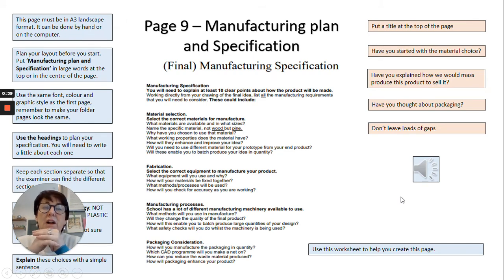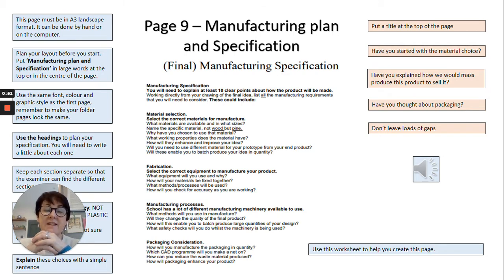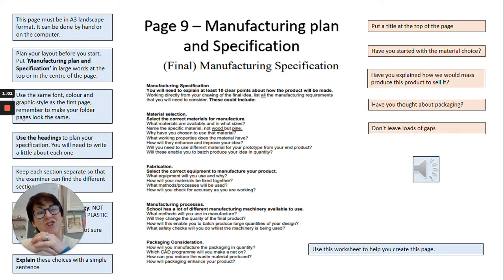First of all, I've got a worksheet here that's in the middle of the screen. It's available at school and it's also attached to the homework. You would need to use this to set out your page and think about what the headings are going to be. You can see on there there are four main headings: material selection, fabrication, manufacturing processes, and packaging. Use these to give you an idea of the types of things you need to consider in your specification.